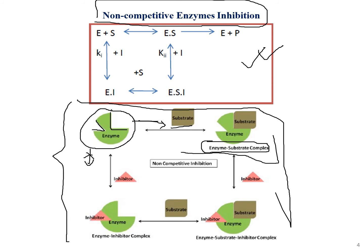We'll stop there once we've formed the enzyme-substrate complex. Coming back to the enzyme, let's follow the second path — the downward part. In this case, the enzyme is attacked by the inhibitor first, not the substrate. The inhibitor occupies its site to form an enzyme-inhibitor complex.